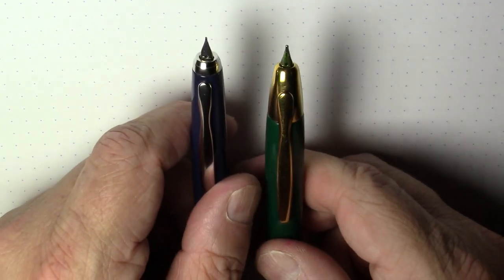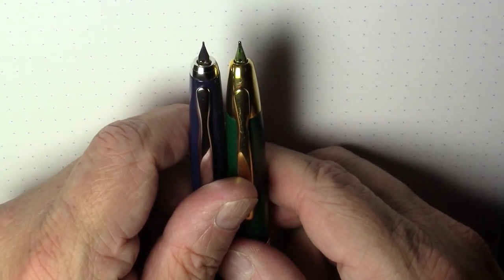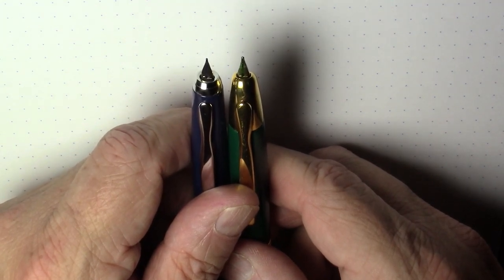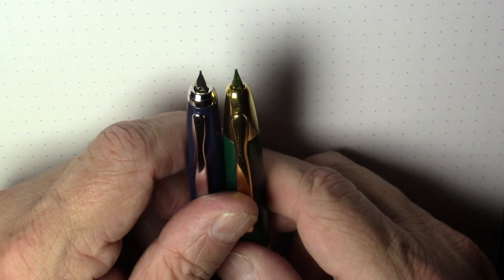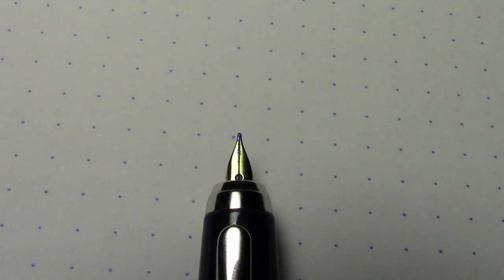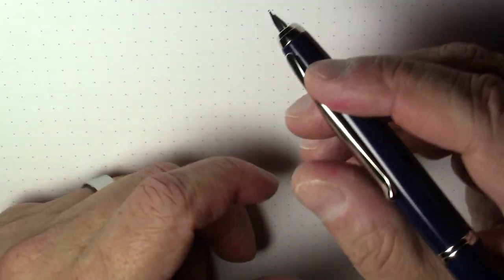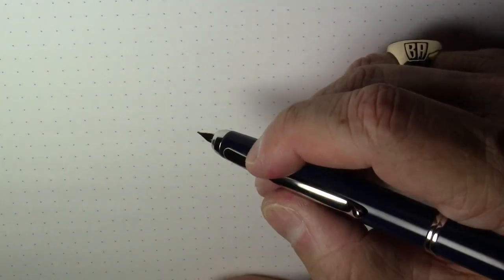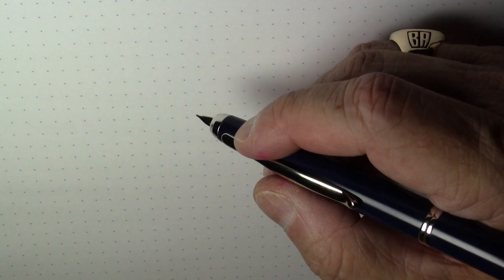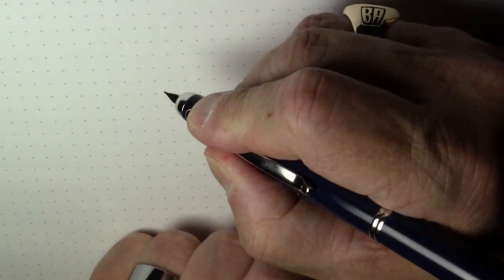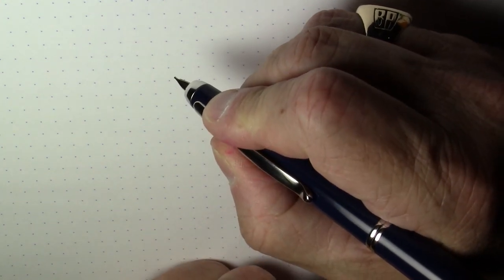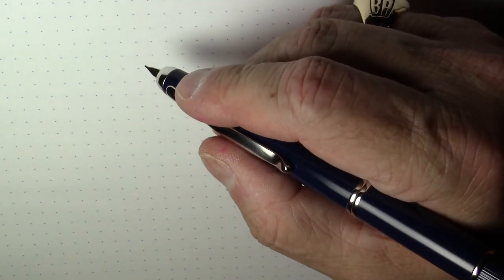It would appear to me that the point extends about the same distance. If you look compared to the normal vanishing point, look at the breather hole etc. So it's extending the point pretty much exactly the same amount. You do have the issue that some people don't like. This is either a love it or hate it kind of thing. When you grip it the clip is going to be right there where you grip it.